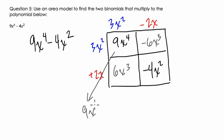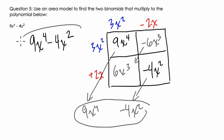This is 9x to the 4th. These two terms are opposites that cancel out to 0x. And minus 4x squared is right here. So this is actually the original binomial we're looking at. So we're looking for the two binomials that multiply to it. And they're here and here.